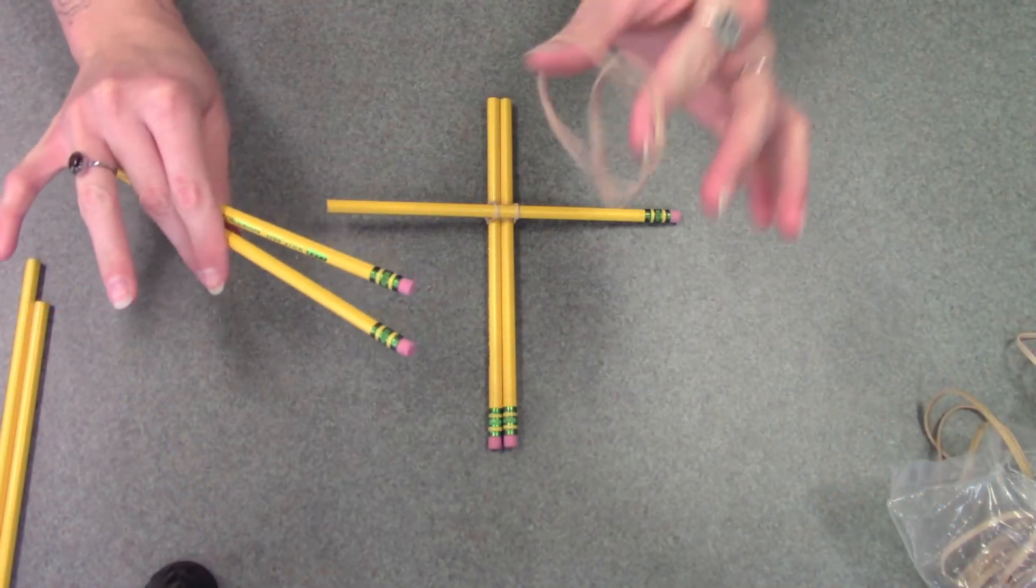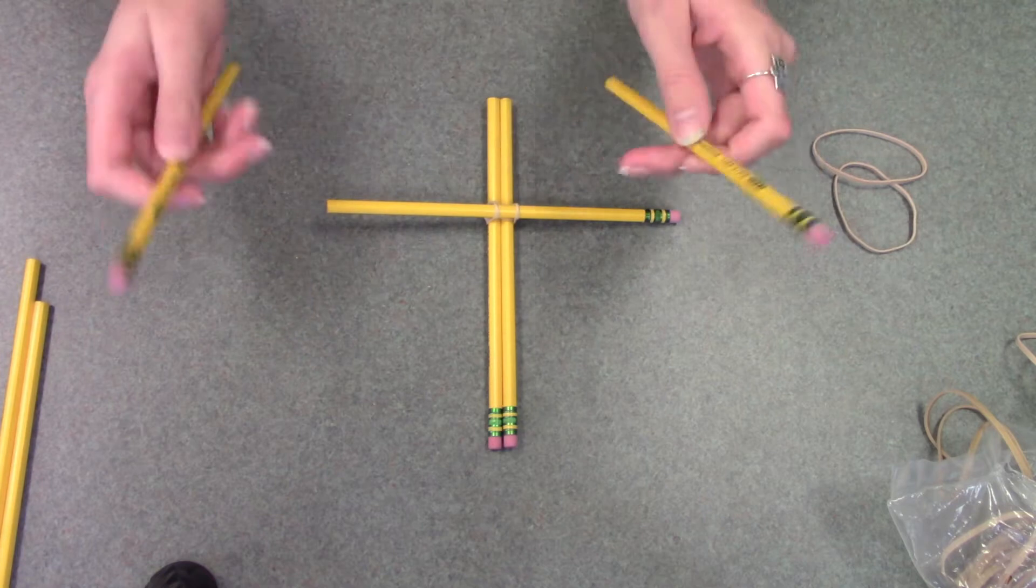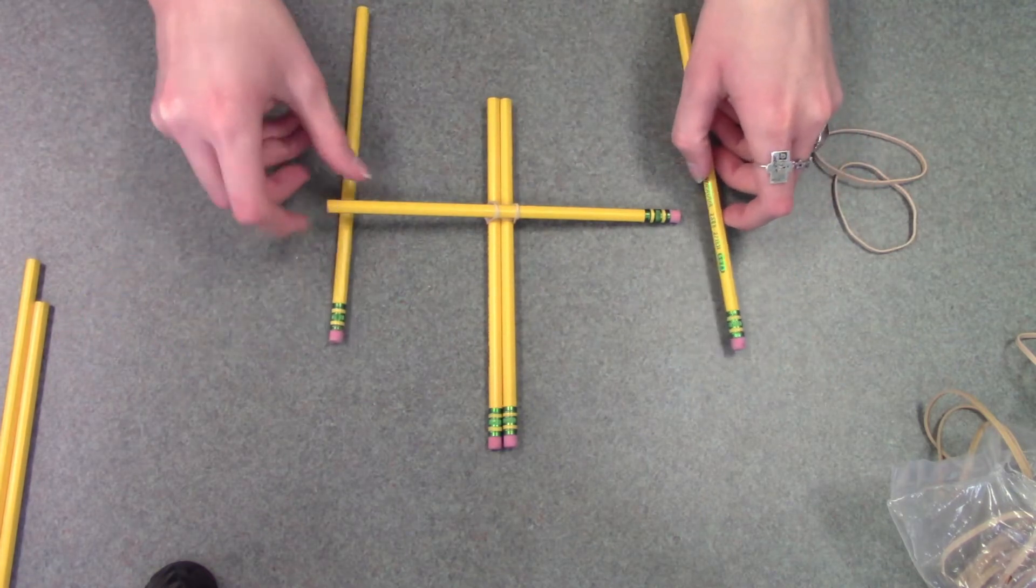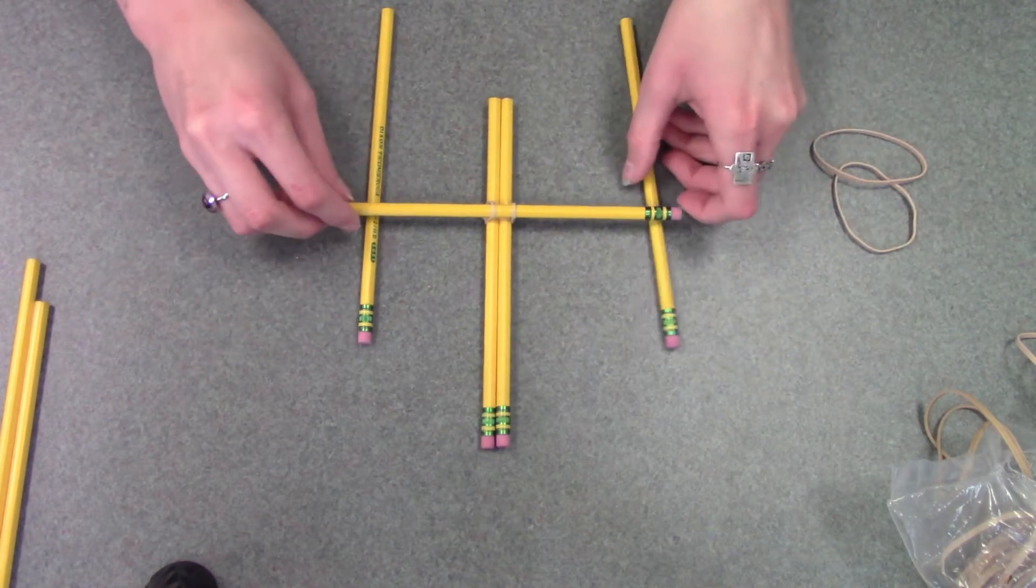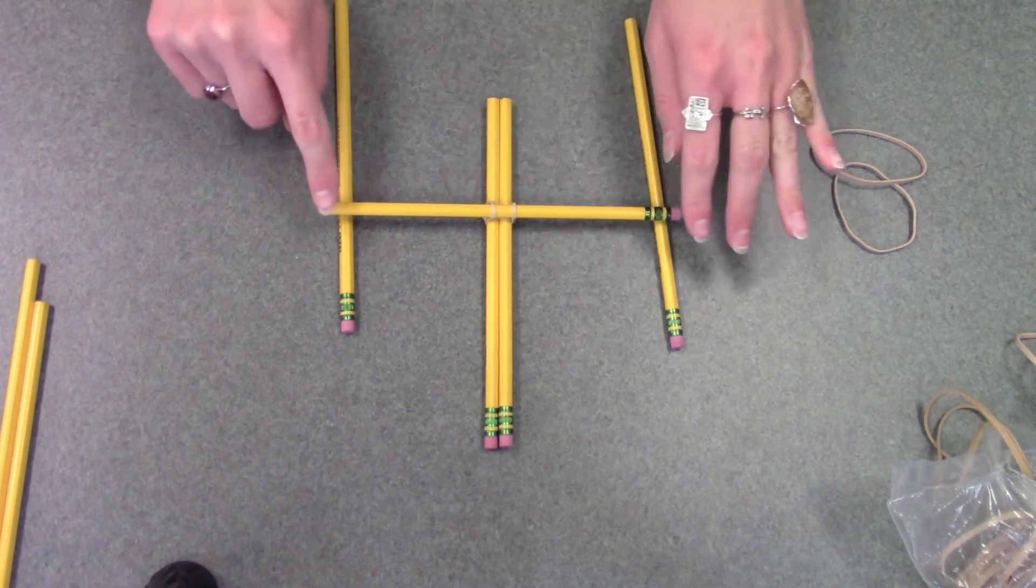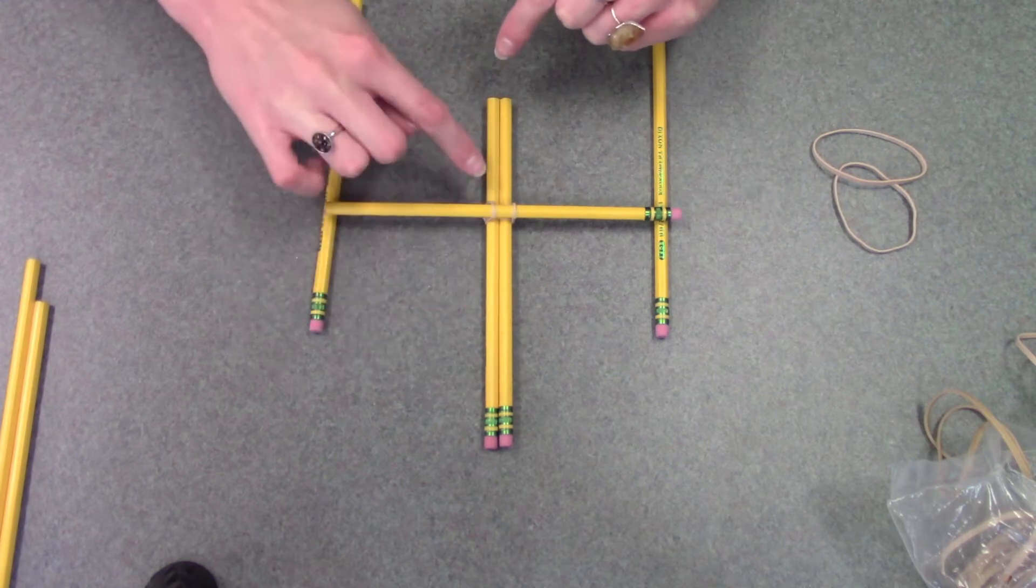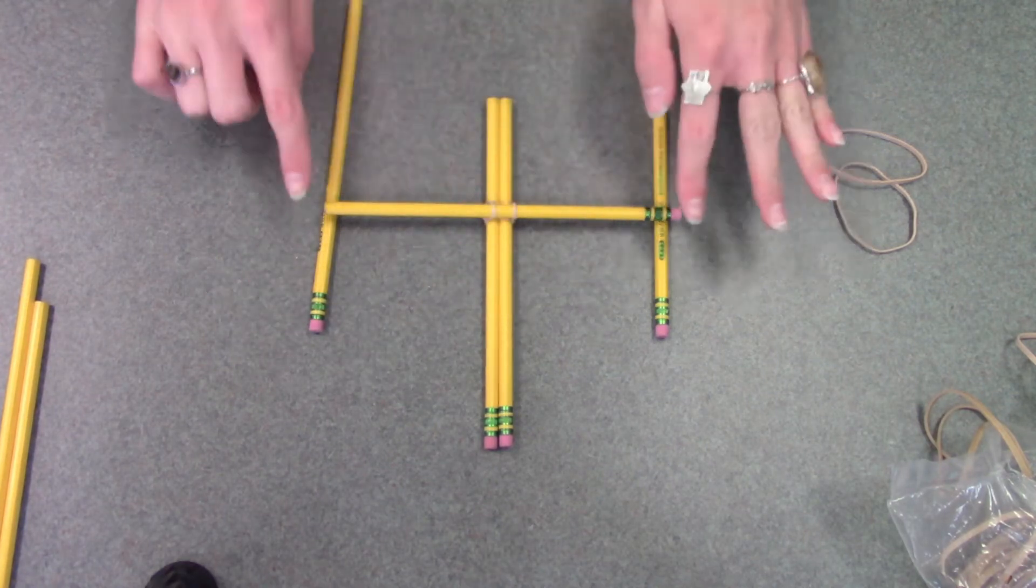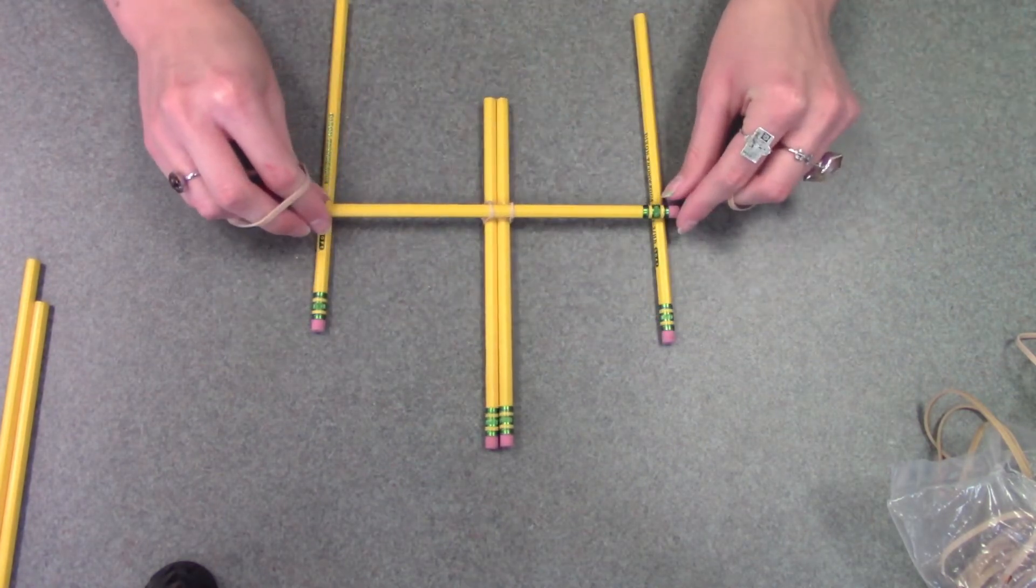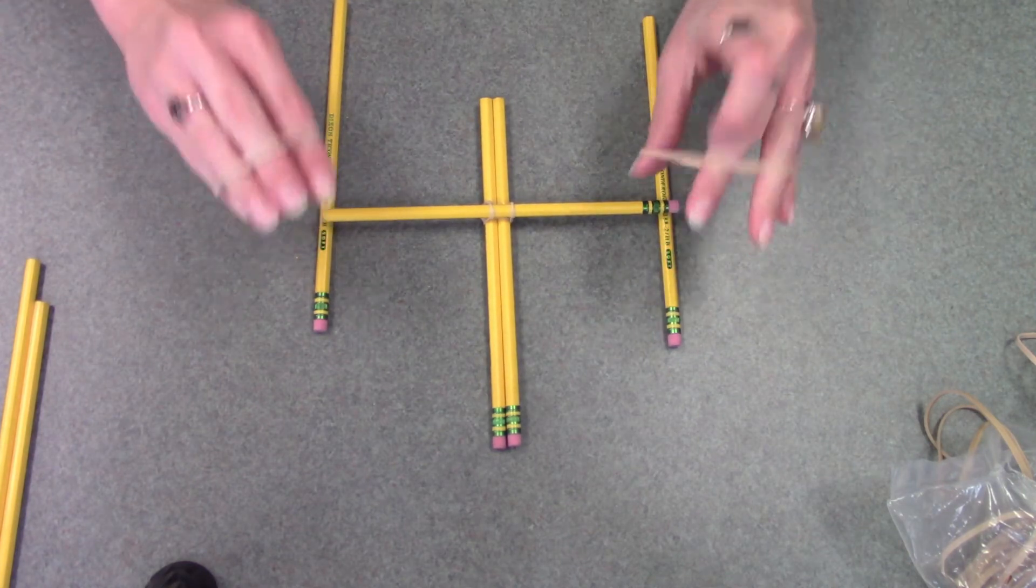Next you're going to take two more pencils and two more rubber bands. You're going to take these two pencils and put them evenly on the sides, making it where the pencil that crosses in between is about two-thirds of the way up. So about the same placement on this one, just flipped and on both sides. Then you're going to connect these two new joints with rubber bands.